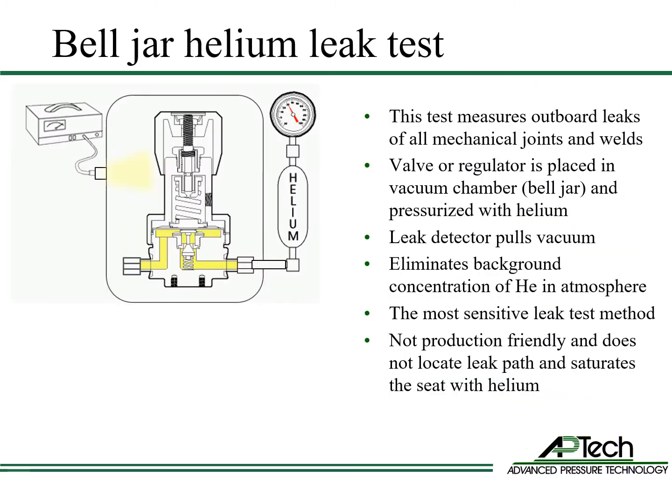The bell jar helium leak test measures outboard leaks of all mechanical seals and welds. The regulator is placed in a vacuum chamber — the bell jar — and the regulator is pressurized with helium. The leak detector pulls vacuum in the bell jar. This eliminates the background concentration of helium in atmosphere, allowing much greater test sensitivity. However, this method is not production friendly as it takes time to set up and perform the test. This method also does not allow the location of the outboard leak path to be identified, and it saturates the seat with helium.